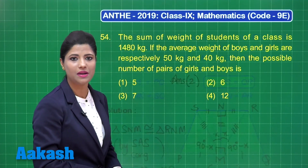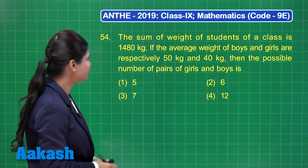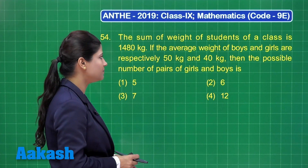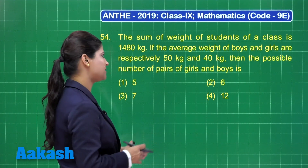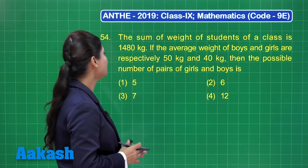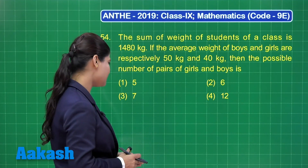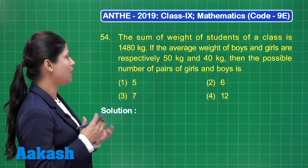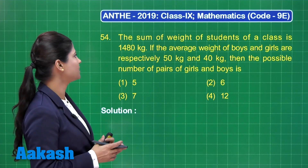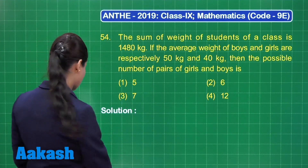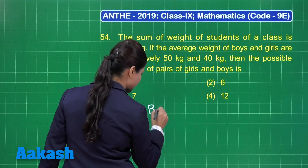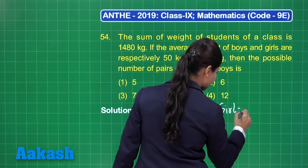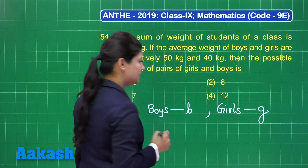I hope it is clear. Let us take up our next question — question number 54. It states that the sum of weights of students of a class is 1480 kg. The average weight of boys and girls are respectively 50 kg and 40 kg. The possible number of pairs of boys and girls is to be found from the options 5, 6, 7, and 12.